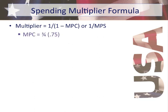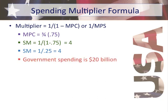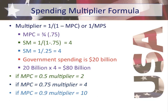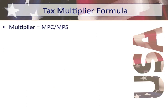We have a multiplier formula: the spending multiplier equals 1 over (1 minus MPC), or equivalently 1 over MPS. If the MPC is 0.75, the spending multiplier is 1 over 0.25, which equals 4. That means any government spending multiplies 4 times its original amount. For example, if the government spends $20 billion on a contract with Boeing, it multiplies to $80 billion of aggregate demand. With an MPC of 0.5 the multiplier is 2; with 0.9 it is 10.